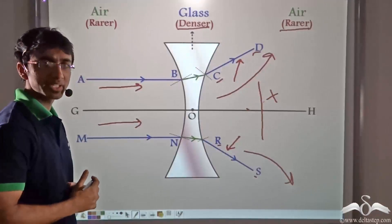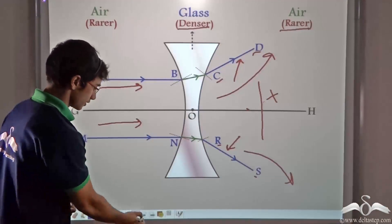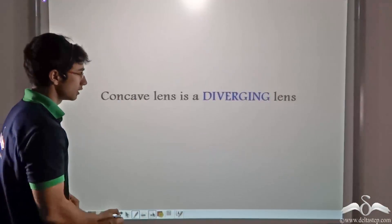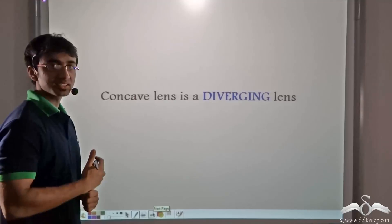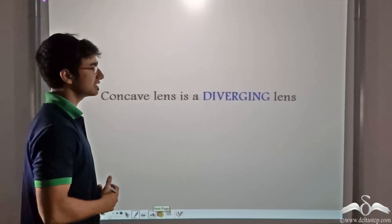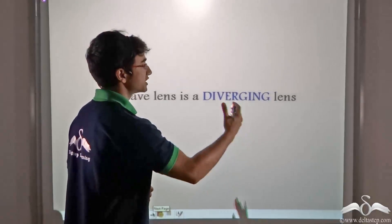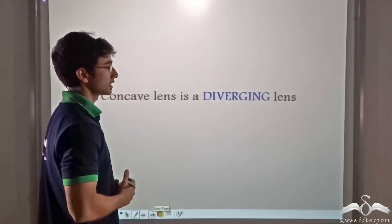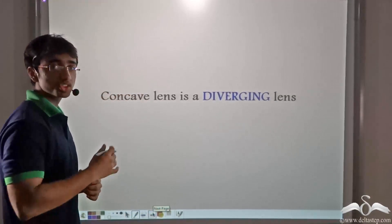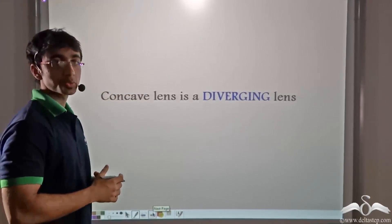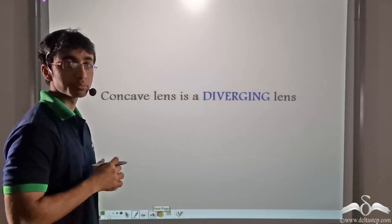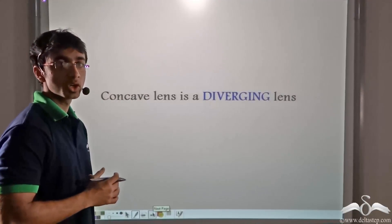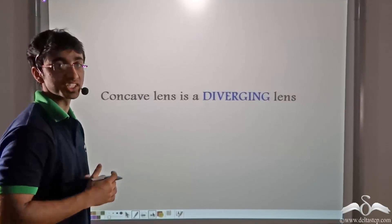So what exactly is happening? A concave lens, we thus conclude, is a diverging lens. And those rays which were not meeting at any point on the principal axis were diverging.